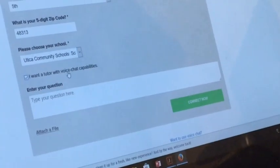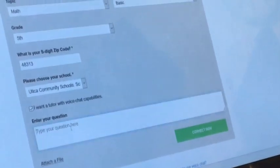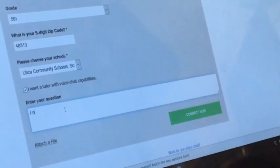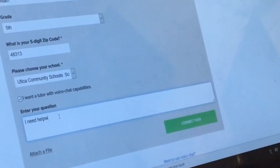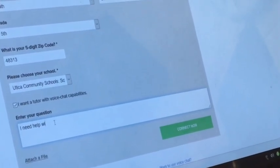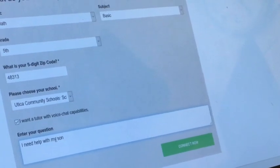Okay there's lots of Utica schools but we want to make sure that we pick Schwarzkopf because this is a school that's going to help us. Now this little box is really important. We're going to click voice chat because we want a tutor that's going to come online and talk to us and then we're just going to say I need help with my son's homework.